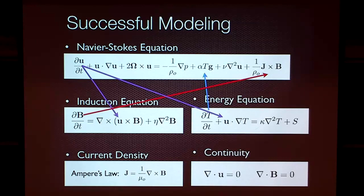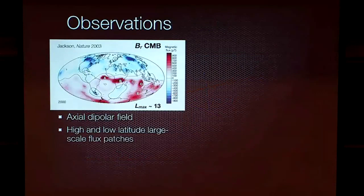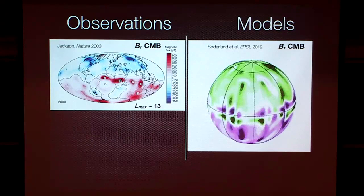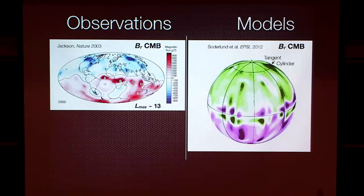Here are our observations from Jackson, and here's the magnetic field on the CMB from a model from Krister Söderland from a couple of years ago. There's the tangent cylinder — the imaginary right cylinder surrounding Earth's inner core. We often see magnetic flux lobes around there in the models, and it looks like we do in Earth's core as well. There are also strong low-latitude flux patches in the models as well as in Earth's core. Obviously this is dipolar and axial. Zeroth order, we're doing very, very well.